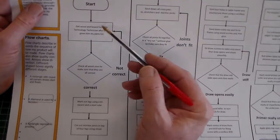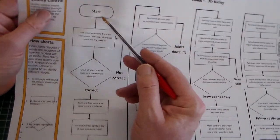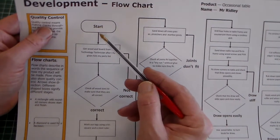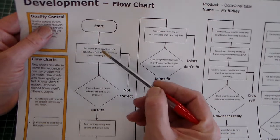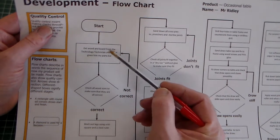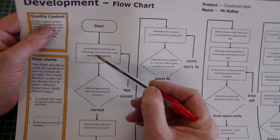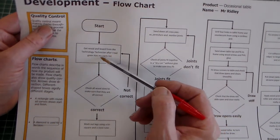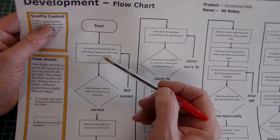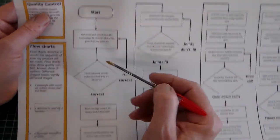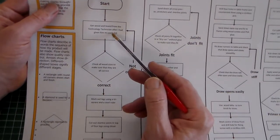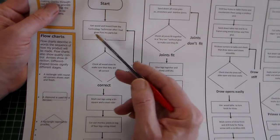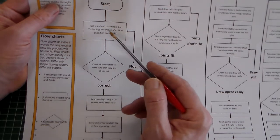Here we've got the start. The example says: get wood and board from the technology technician after giving him a parts list. That is a process step.